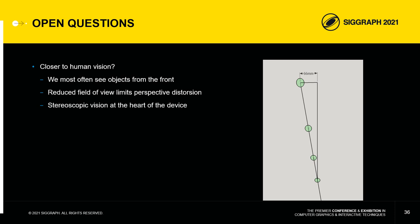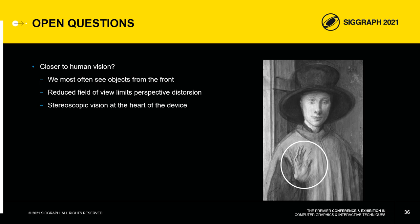Did Van Eyck simply want to symbolically represent human vision at the very heart of his optical device? Or did this stereoscopic view allow him to depict objects from several angles and ultimately choose a version that best suited his aesthetic and symbolic intentions?